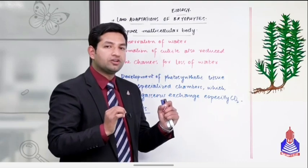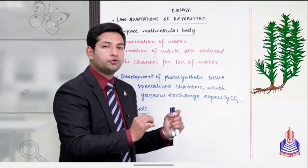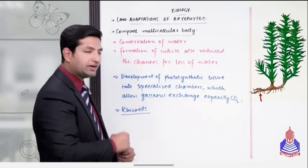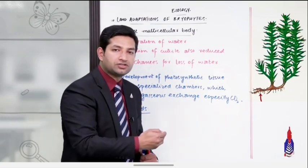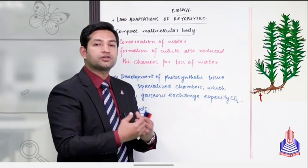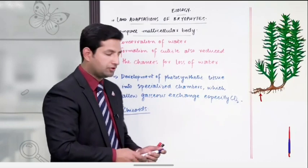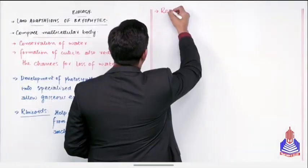Plant body which cannot be differentiated into true roots, stem, or leaves. So what are rhizoids? They are root-like structures, but they are capable of absorption of water as well as they provide anchorage to the plant.